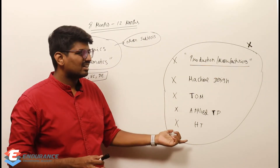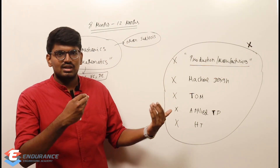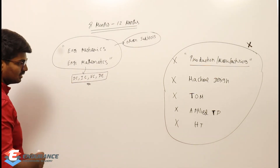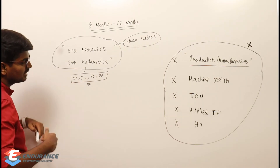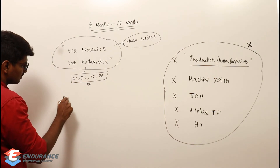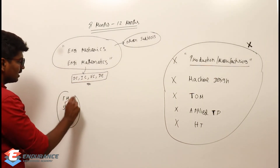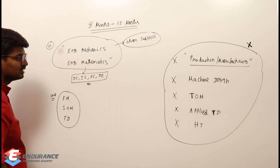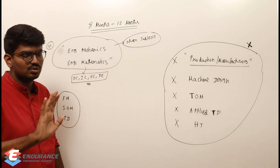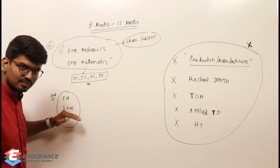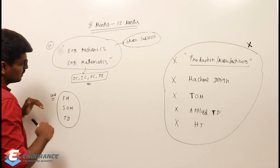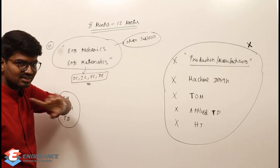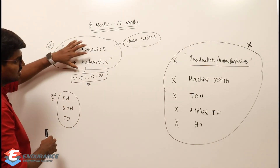Industrial Engineering can be covered at the end since it can be studied in a short time. If you are not comfortable with Engineering Mechanics or Mathematics, the second preferred subjects are Fluid Mechanics, Strength of Materials, or basic Thermodynamics. After completing Engineering Mechanics and Mathematics, you can pick Thermodynamics, SOM, or Fluid Mechanics in any order you prefer.